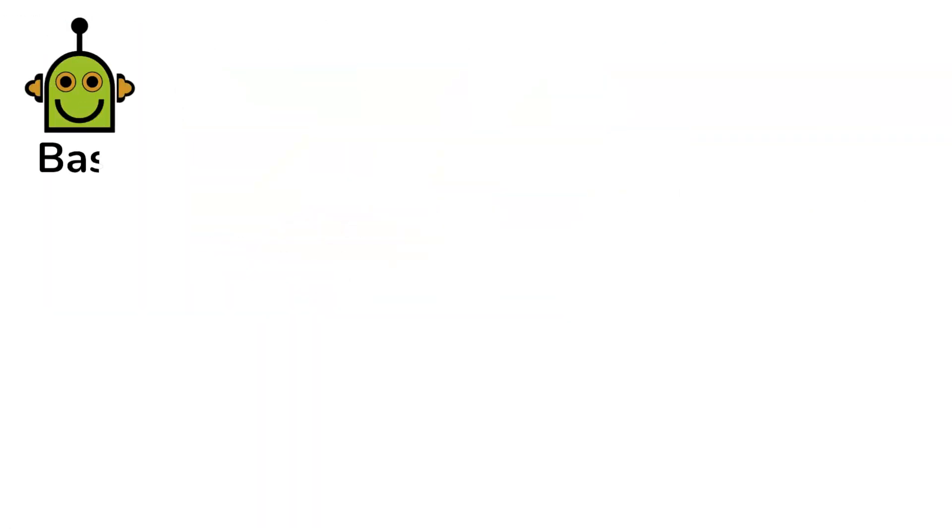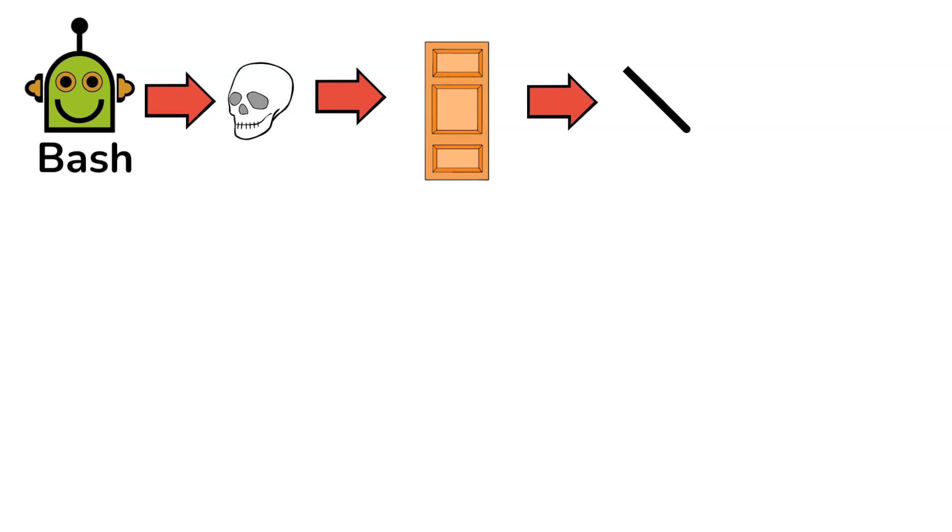So, for example, the robot bash can now do naughty stuff like open the door for them when it was not supposed to or when the owner is not in the house.